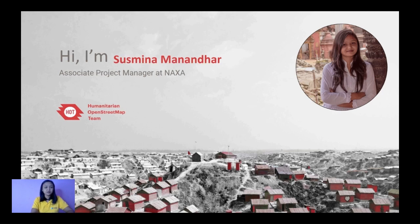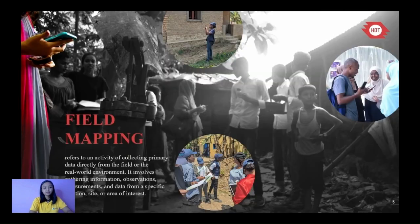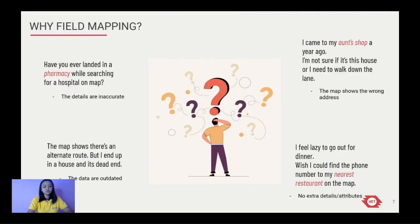So talking about data — data is abundant. You can find all sorts of data from anywhere, but it's very rare to find data that's complete and contains enough information. This is the gap that we find, and we want to fill it. The solution that could actually fill those data gaps is field mapping.